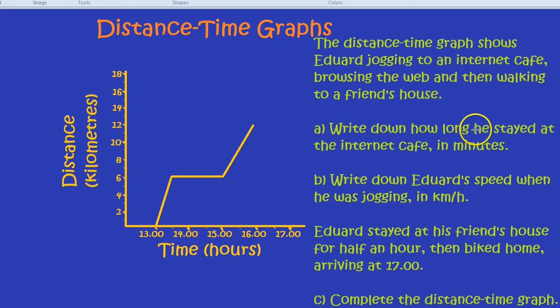Write down how long he stayed at the internet cafe in minutes. Well, let's explore this graph. It started off at one o'clock, and what's happening along this line? Well, the distance is increasing. That means he's going somewhere, further away from where he started with. In this case, he's jogging to an internet cafe.